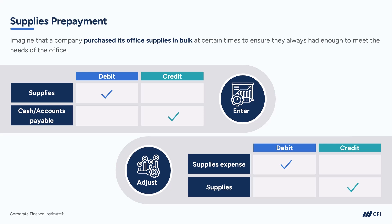This is done as an adjusting entry because it's not practical to track the use of office supplies on a daily, weekly, or monthly basis. However, someone will perform a count of the supplies at least at the end of the year, or possibly take an inventory, and then adjust the expense based on the count of the supplies.